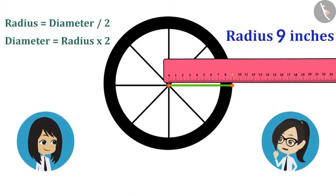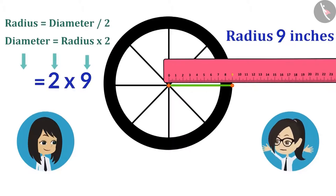That means if we multiply the radius by 2, then the measure of diameter will be known. The radius is 9 inches and multiplied by 2, it will be 18 inches. This means that the diameter of the wheel of our bicycle is 18 inches.